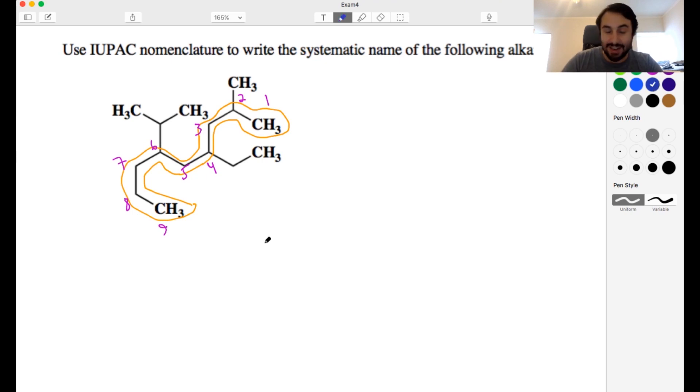So nine carbons this is a nonane and what do we have? On carbon two we have a methyl, on carbon four we have an ethyl, and on carbon six we have an isopropyl. Now we need to list these substituents in alphabetical order. So which comes first? We have E and then I and then M.